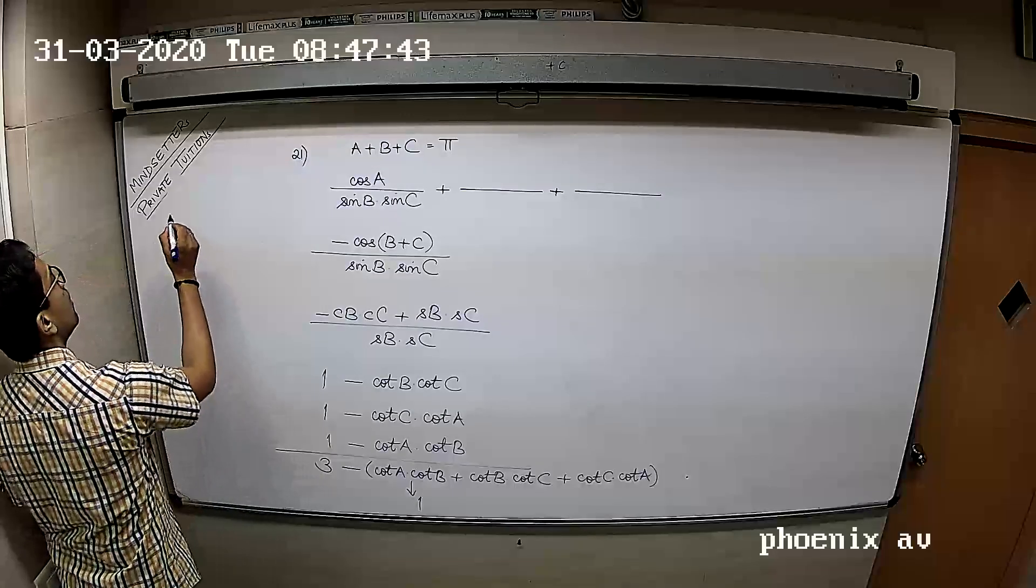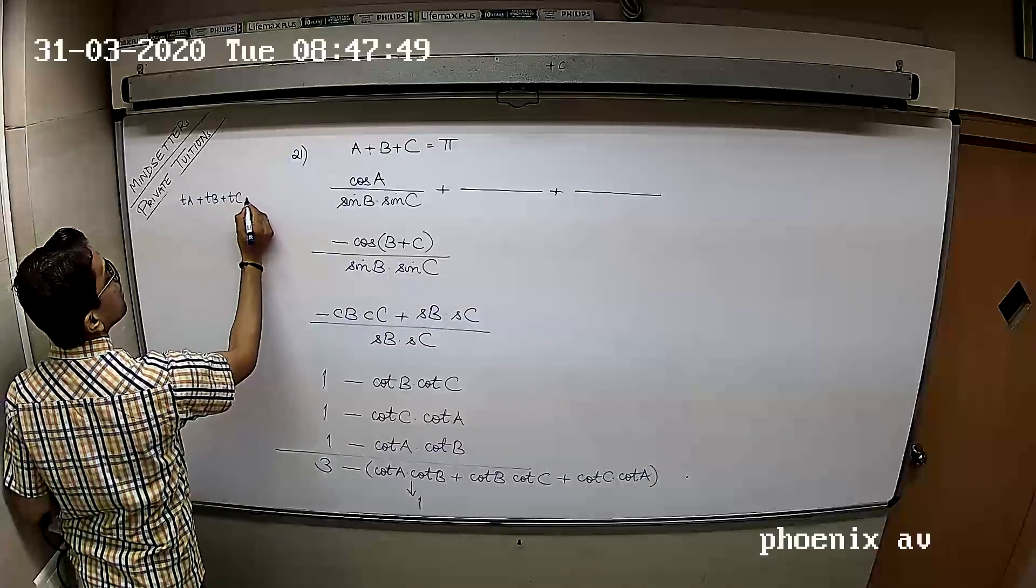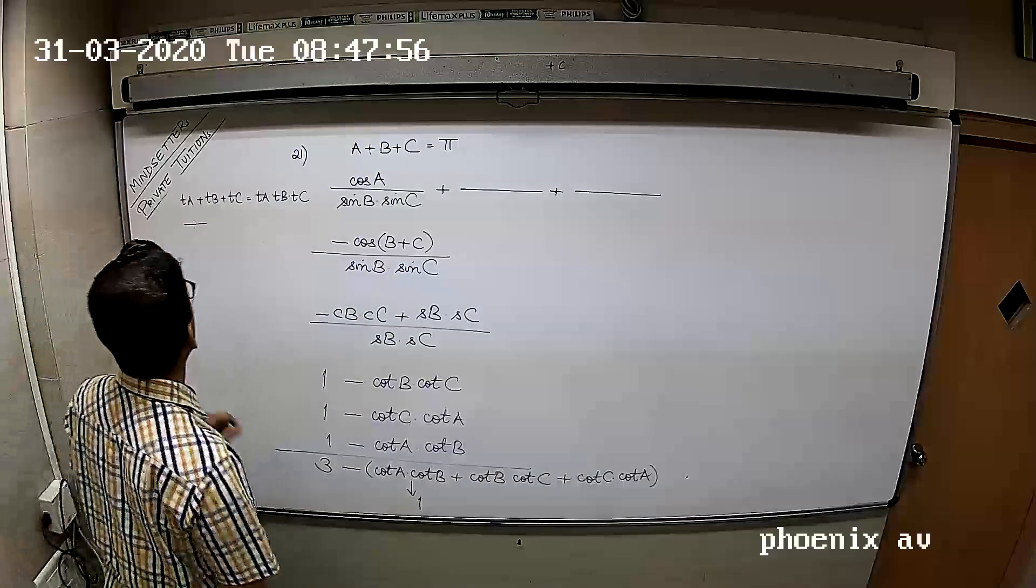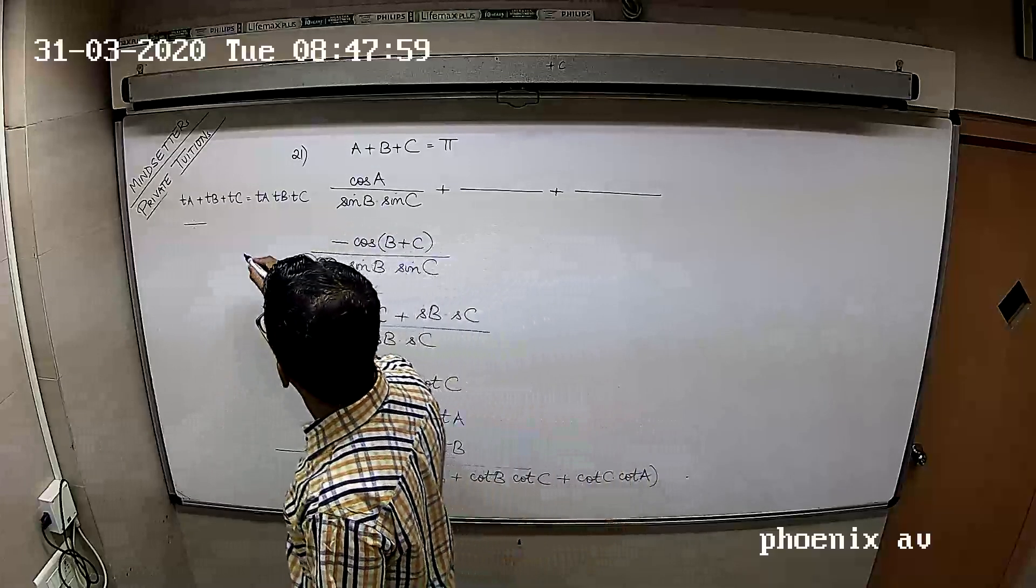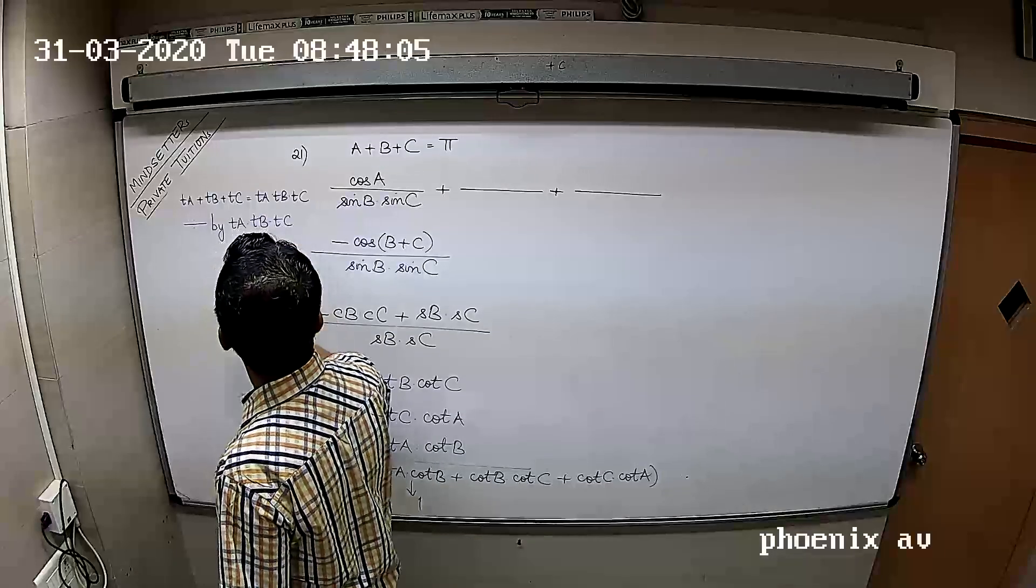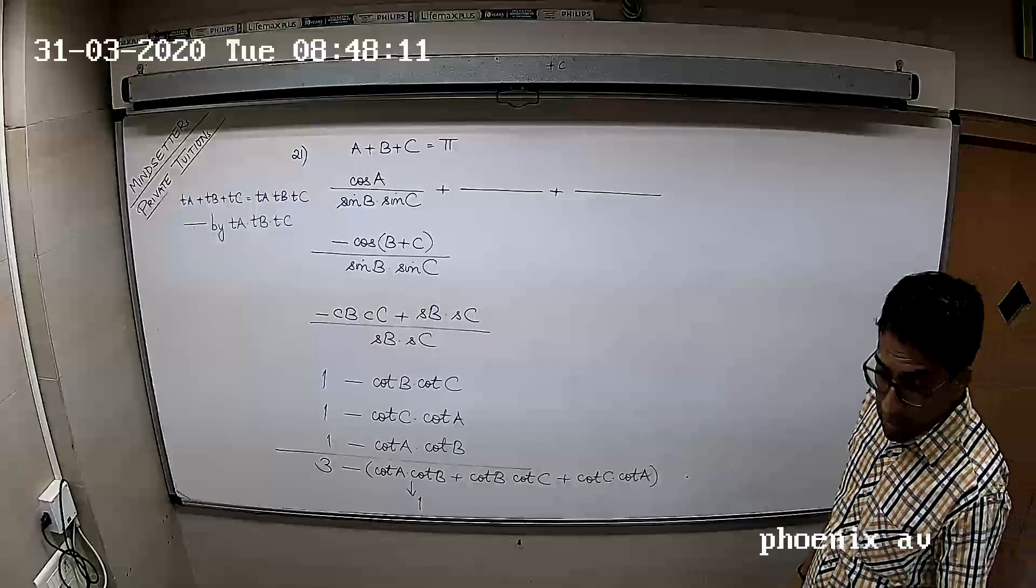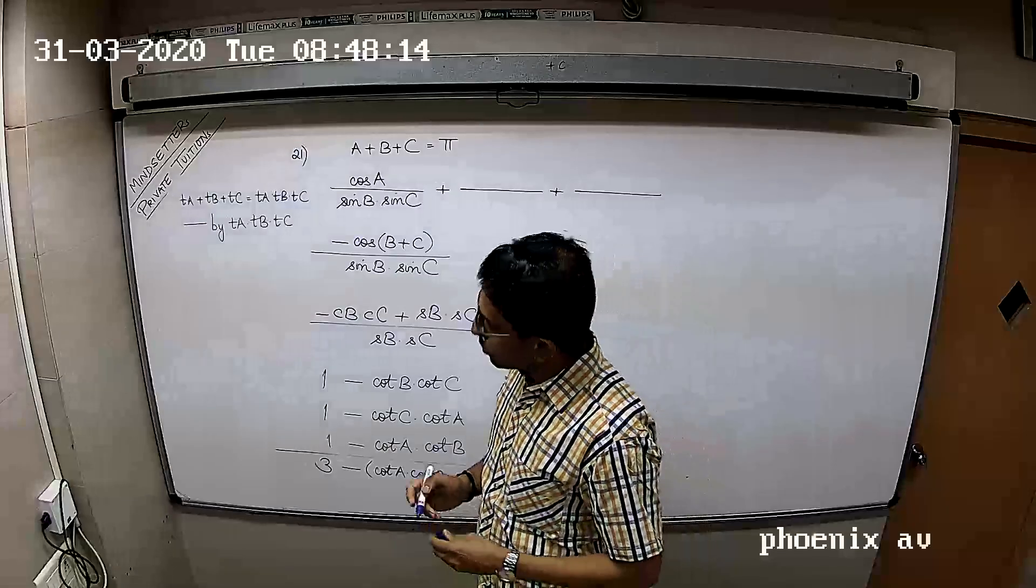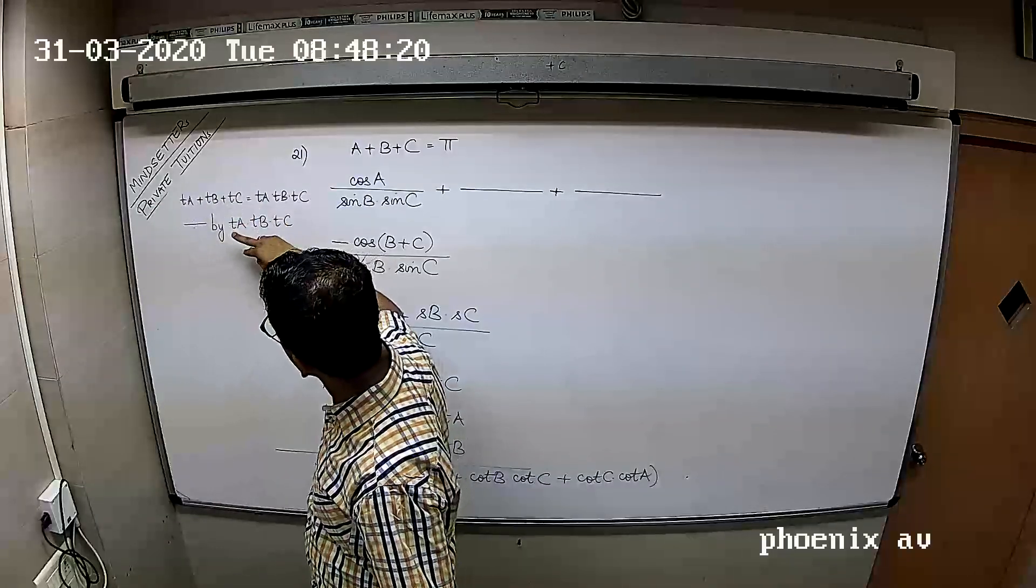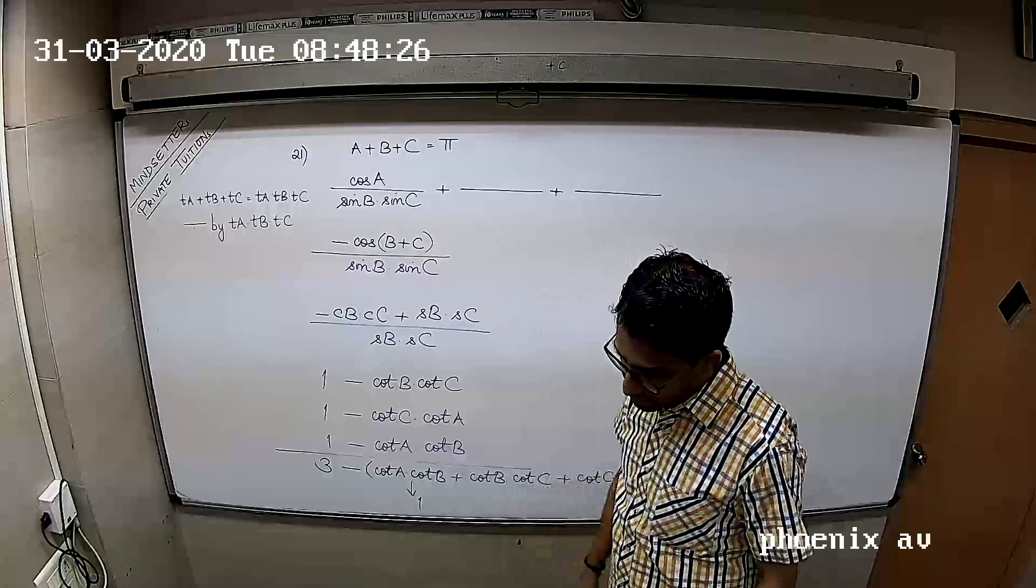Divide throughout by tan A tan B tan C. You will get 1 upon tan B tan C, that's cot B cot C, plus cot C cot A plus cot A cot B is equal to 1. So this is 1, hence the answer is 2.